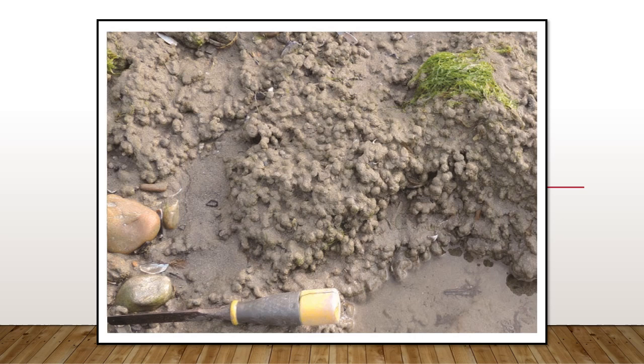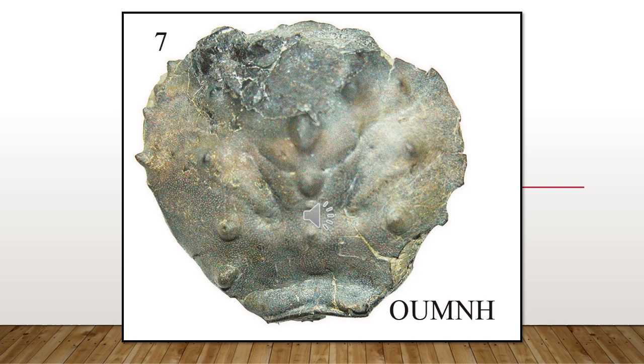Now these are what we think might be sand spherules made by prehistoric bubbler crabs, but work needs to be done to prove it. Bubbler crabs are only supposed to have appeared during the Miocene, around 30 million years ago, but these rocks are around 120 million years old. If we're right, that extends their time period by around 80 to 90 million years, and this would be important evidence of a tidal environment, since bubbler crabs feed on sand during low tides.